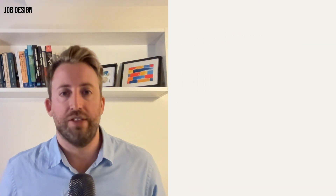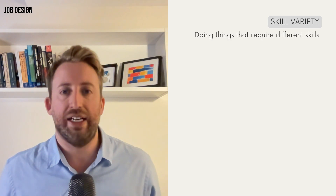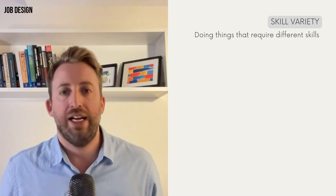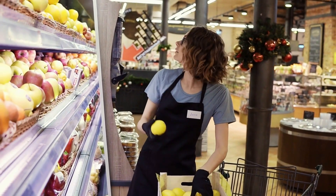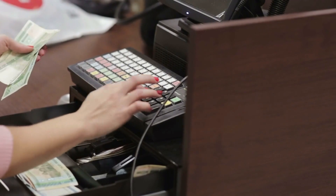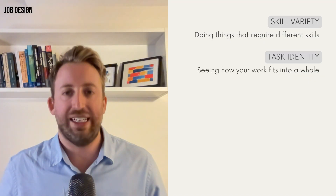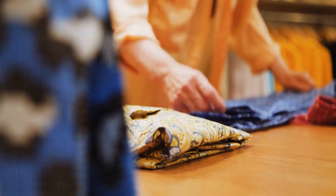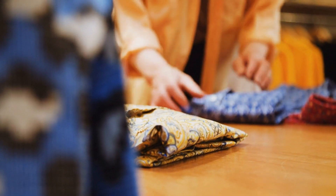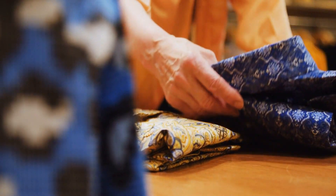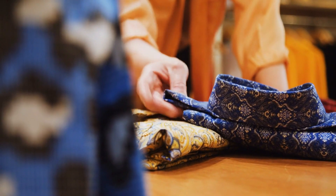Now let's break down the five core job characteristics. The first is skill variety — the chance to do different things and use different skills. In a retail example, this might be stocking shelves, helping customers, and managing the cash register. The second is task identity — seeing how your work fits into the bigger picture. Even if you're just folding clothes, you can take ownership of that project and see it through from start to finish and contribute to a fantastic customer experience.